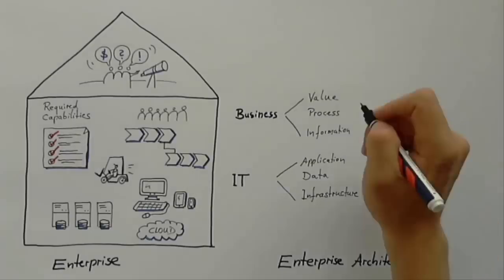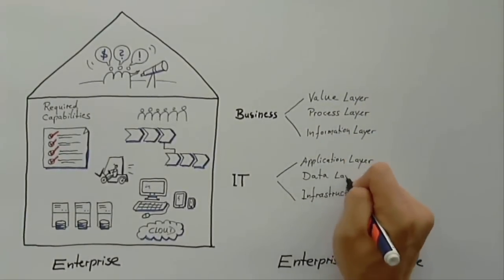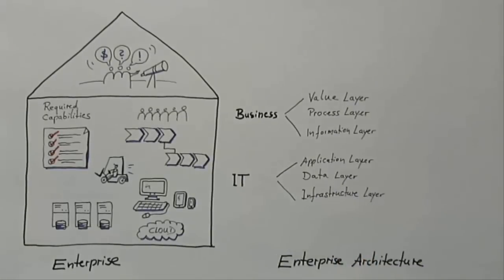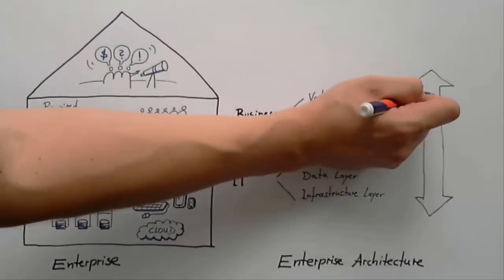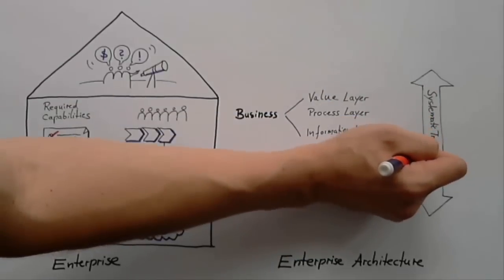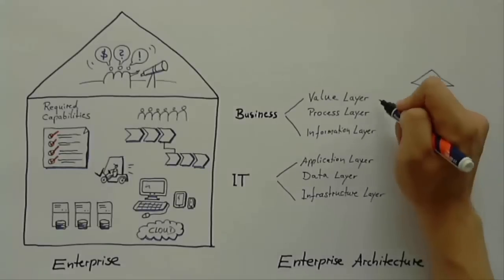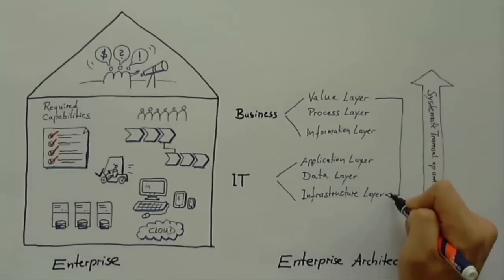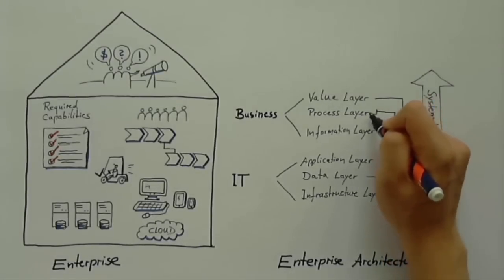The most interesting thing about enterprise architecture, however, is not just how it describes these different layers within the enterprise. The really interesting thing is to understand how these layers relate to each other and how they work together. A perfectly modeled enterprise architecture would enable you to perform a systematic up and down traversal between these layers. This would allow you to understand which business values are connected with which IT infrastructure or system, or which data is required by which process to support which value.